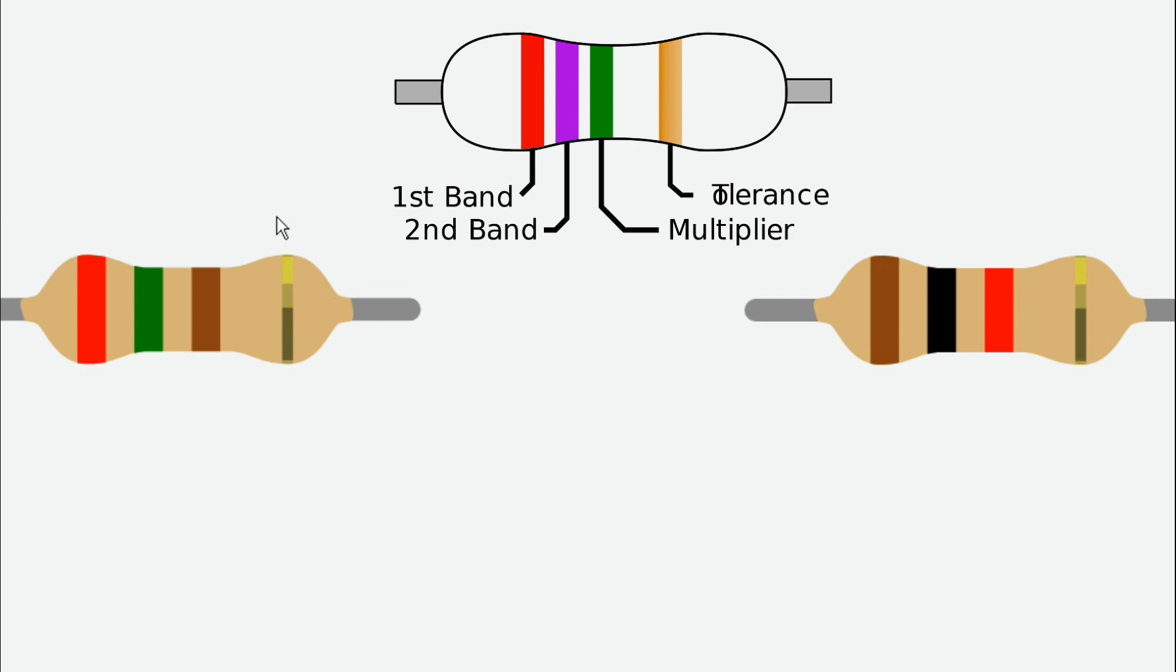That is the tolerance band. So here in these two resistors, the tolerance band is gold. Between the two resistors you can see one side has three colors and the other side has one color. On one side there are two colors, and the other side has the tolerance band.